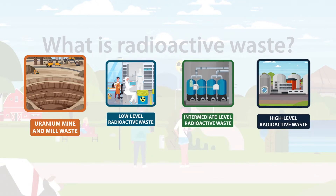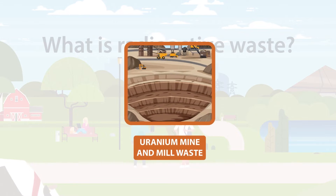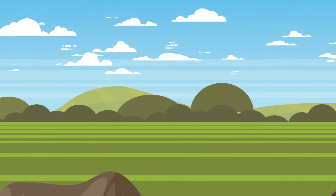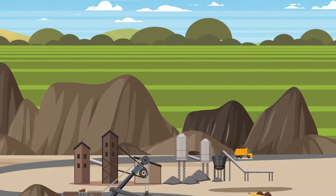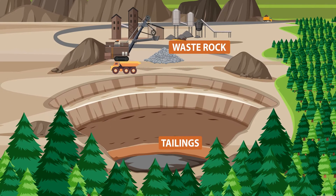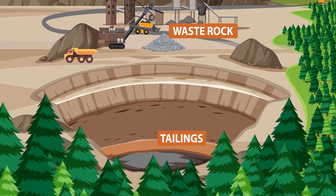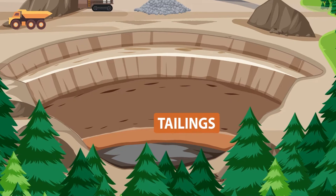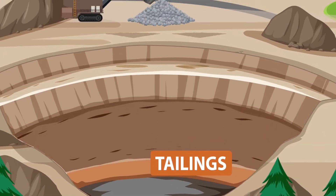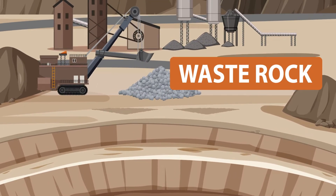The first of the four general classes is uranium mine and mill waste. This includes tailings and waste rock generated by the mining and milling of uranium ore. Tailings have the consistency of fine sand, while waste rock is simply gravel and broken up rock.